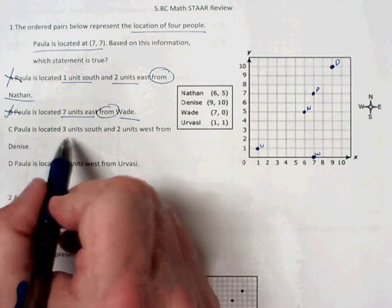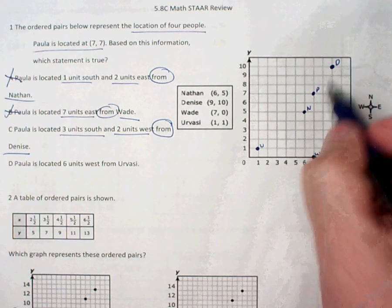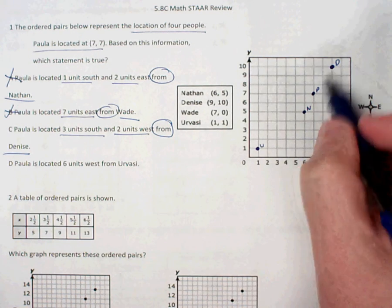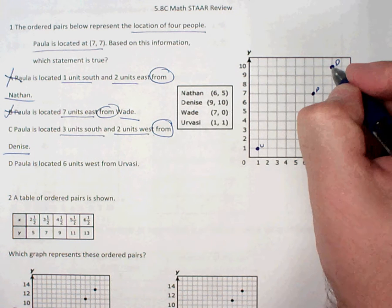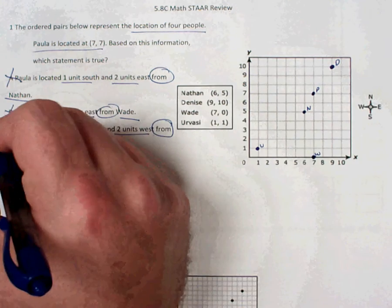C, Paula is located 3 units south and 2 units west from Denise. So let's start at Paula. No, I'm sorry, we're starting from Denise. Starting from Denise. And we're going to go 3 units south, 1, 2, 3, and 2 units west, 1, 2. Okay, so that works.